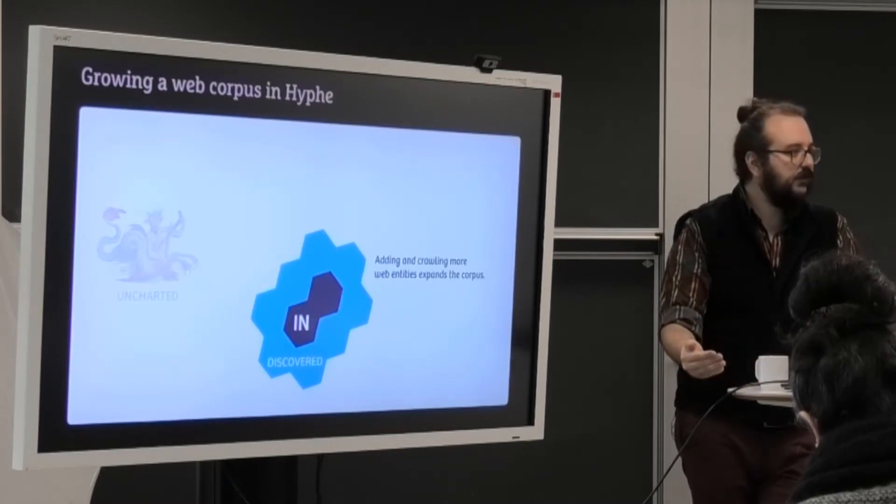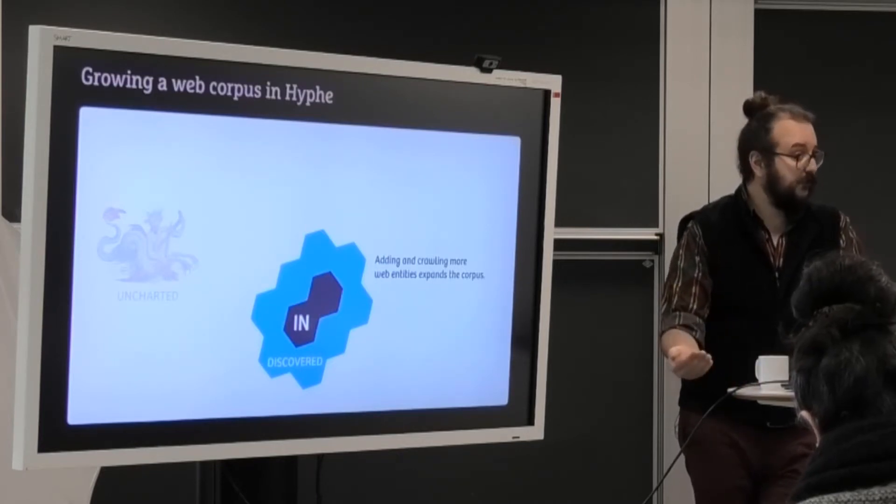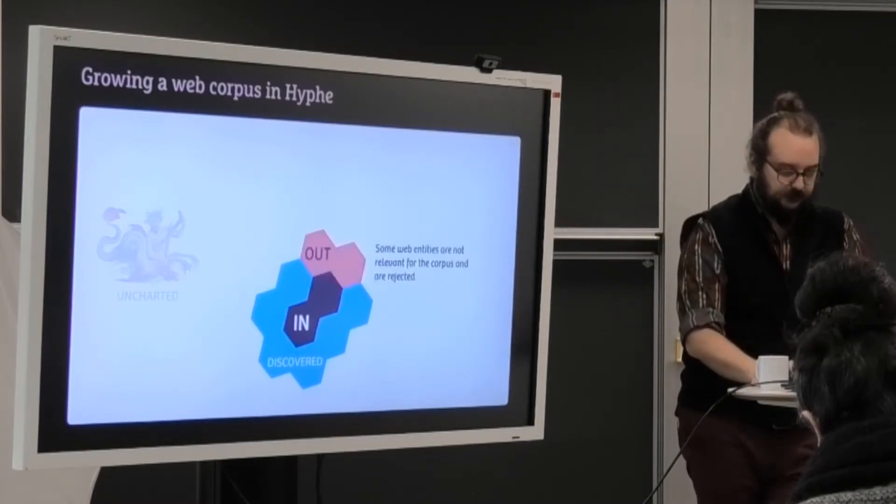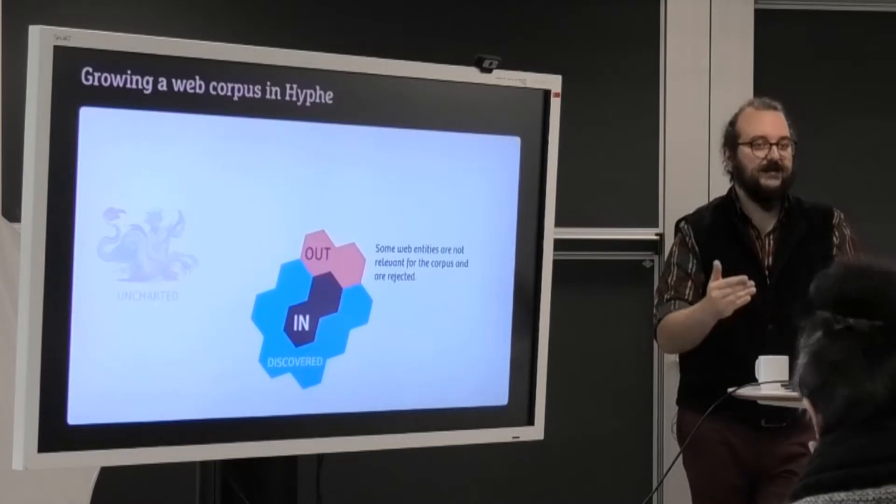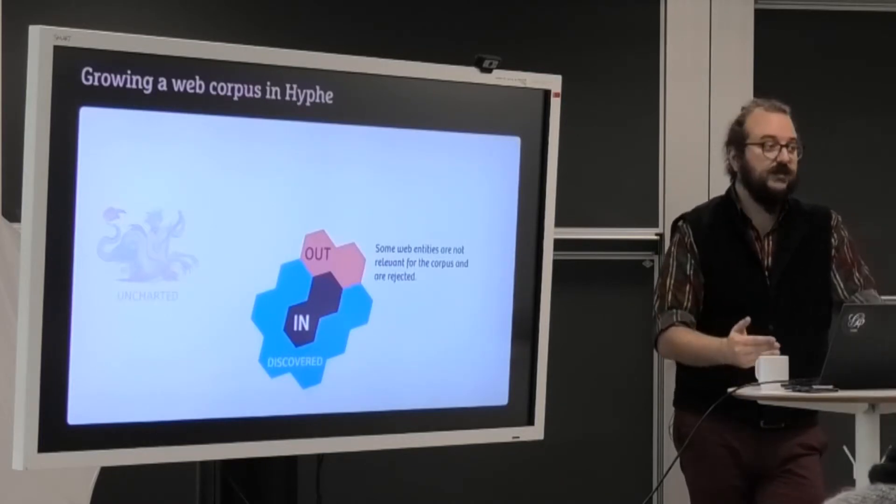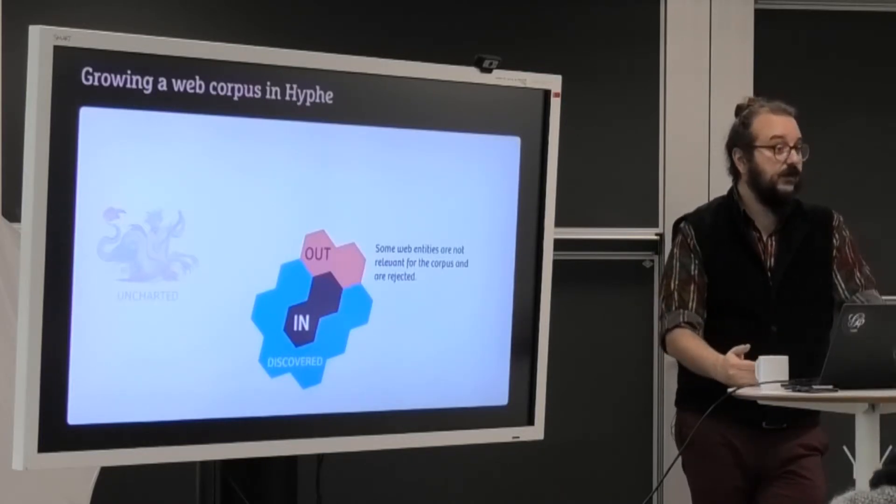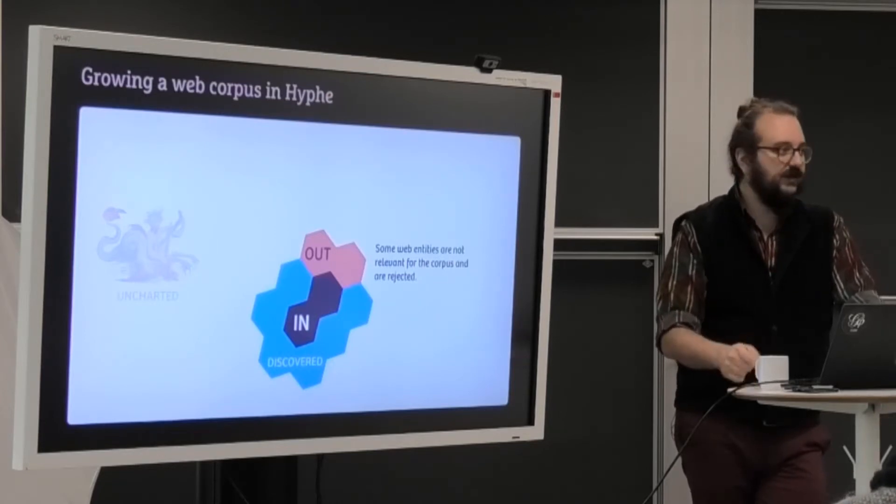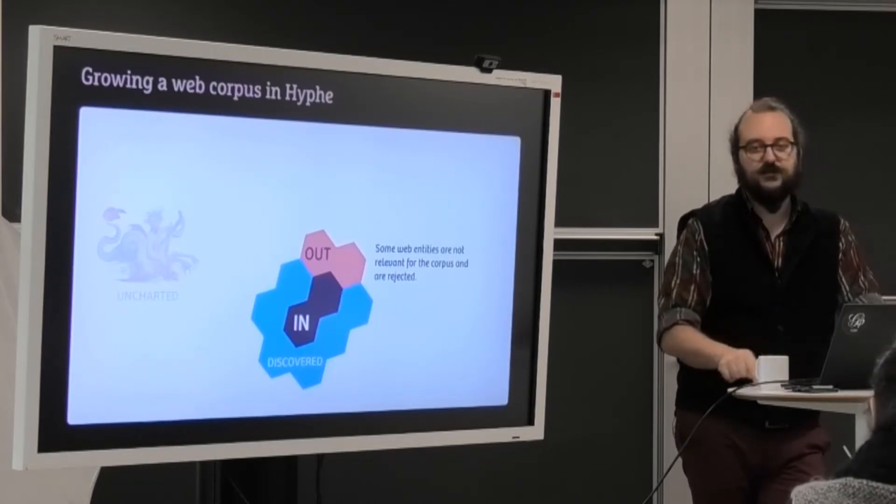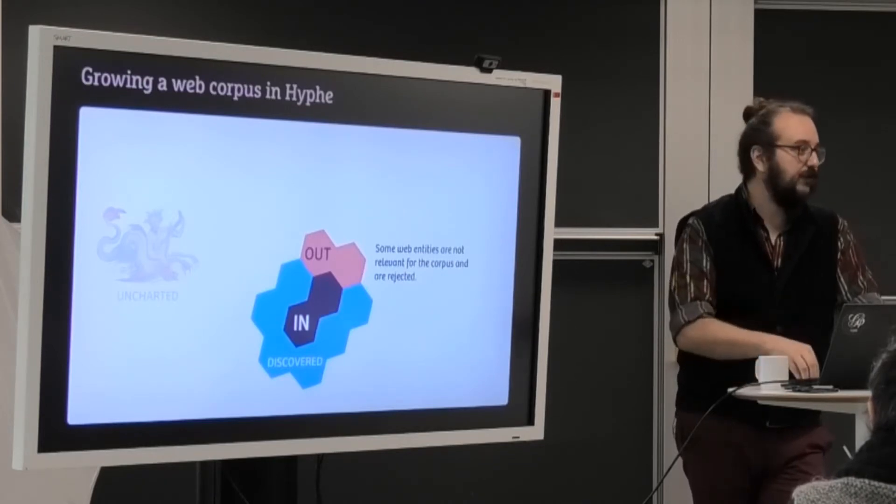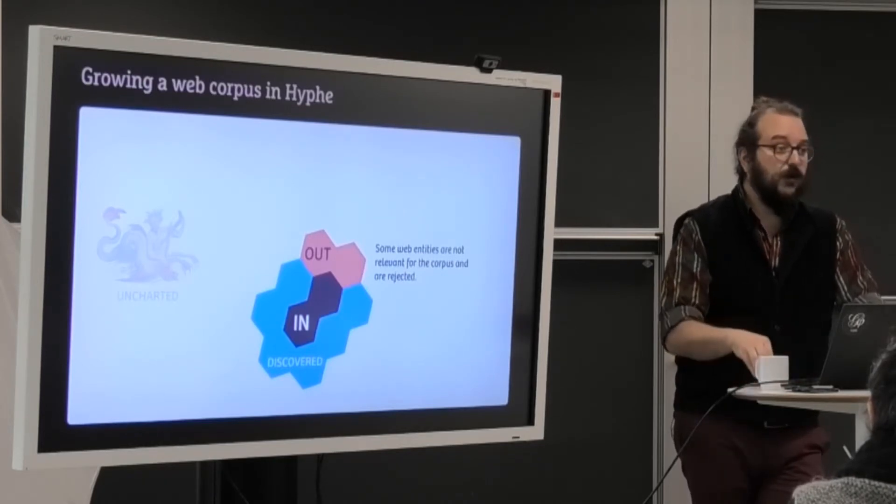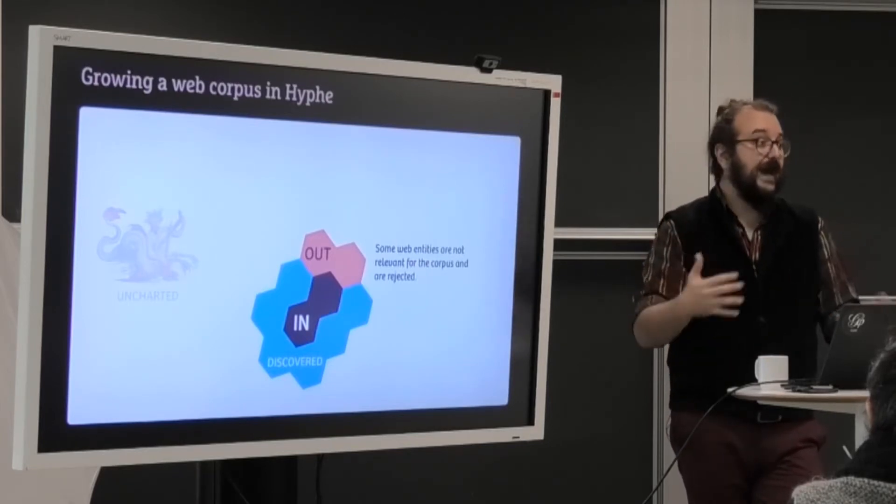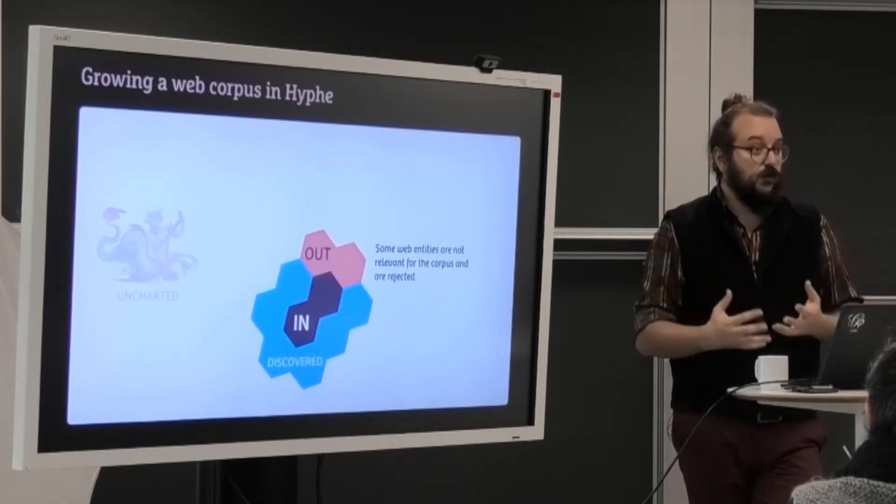Sometimes you take a look at these entities and you don't want them because, for instance, they are in another topic. So then you set them as OUT. And when you set them as OUT, we don't look at their neighbors. That's the difference between setting something IN and OUT. We crawl the IN, but we don't crawl the OUT. The OUT has no border because it is kind of the dead border, the actual border of your corpus.